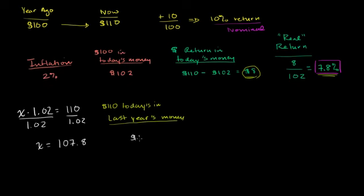as $107.80, and maybe I could even add another digit, $107.84, and $107.84 would have bought us last year. So what is our dollar return in last year's money?